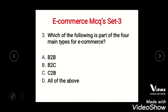Question 3: Which of the following is part of the four main types of e-commerce? Options: A) B2B, B) B2C, C) C2B, D) All of the above. The right answer is D, all of the above. B2B is business to business, B2C is business to customer, C2B is customer to business.